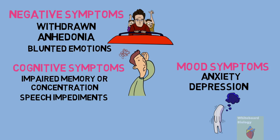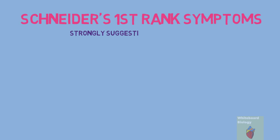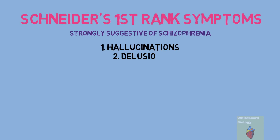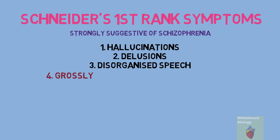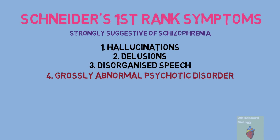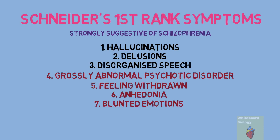So how is someone diagnosed with schizophrenia? The presence of Schneider's first rank symptoms are strongly suggestive of schizophrenia. The diagnosis requires two or more of the following symptoms, and must include one of the first three: hallucinations, delusions, disorganised speech, grossly abnormal psychomotor behaviour, and negative symptoms which can include feeling withdrawn, anhedonia and blunted emotions.